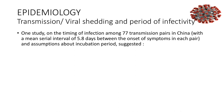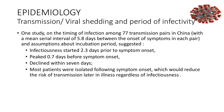Regarding virus shedding and period of infectivity, one study of 77 transmission pairs in China found a mean serial interval of 5.8 days between symptom onset in each pair. Assuming an incubation period, infection was estimated to begin 2.3 days prior to symptom onset, peaking 0.7 days before symptoms. It declined within seven days, and most patients were isolated following symptom onset, which reduced transmission risk later in illness.